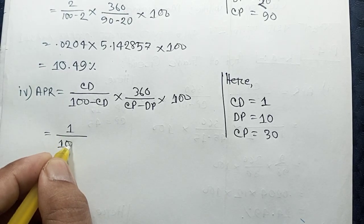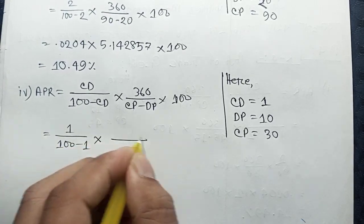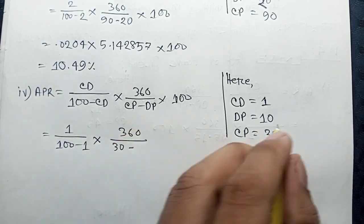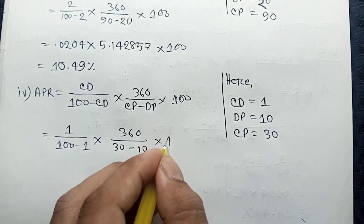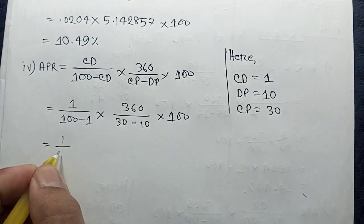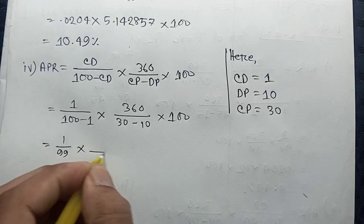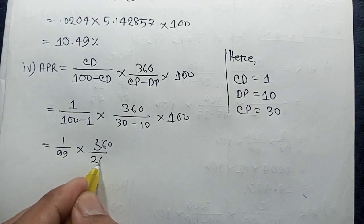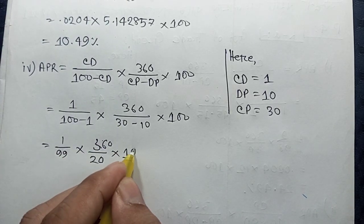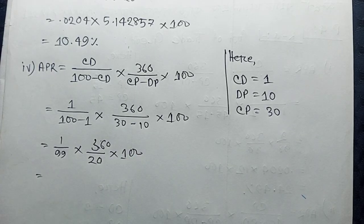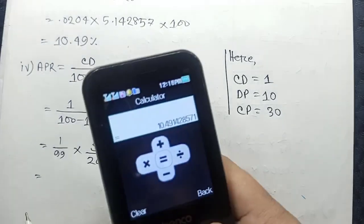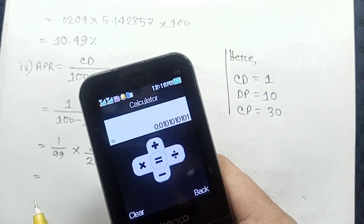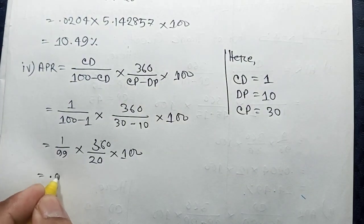So this is the 1% discount calculation: 1 divided by (100 minus 1), multiplied by 360 divided by (CP minus DP), which is (30 minus 10), multiplied by 100. That gives: 1 by 99, multiplied by 300 by 20, multiplied by 100. Result: 0.0101 into 15 into 100.